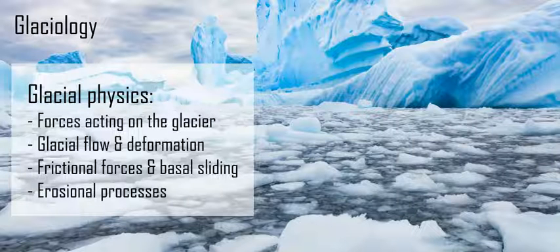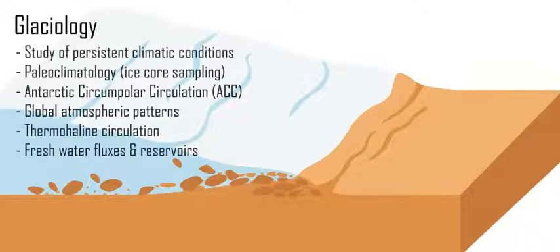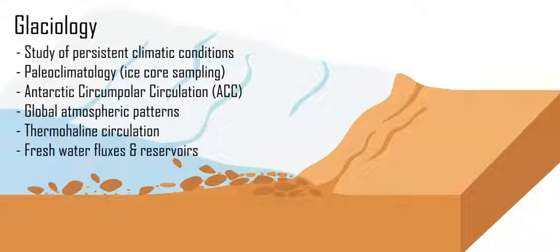Glaciology also looks at climate change with the change in ice coverage between summer and winter based on latitudes, the biology and ecology of what lives on and under the ice, paleoclimatology through ice cores, the circulation of water and thermohaline circulation related to the influx of fresh water from melting ice caps, and the chemistry of the oceans and how sea ice forms.